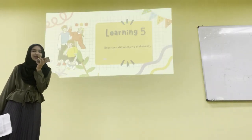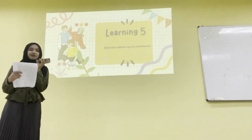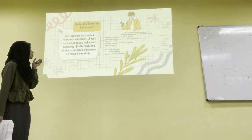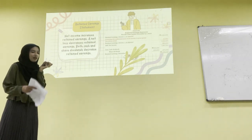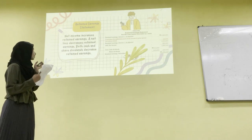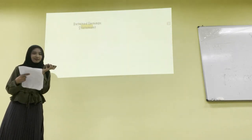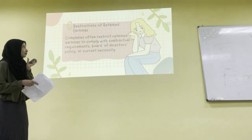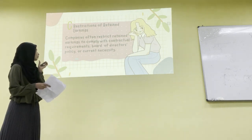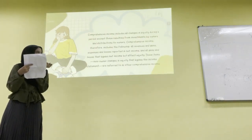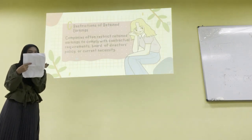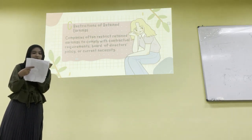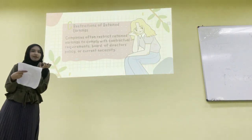Hello everyone, my name is Mutia Intan Permata. I will explain learning objective 5: describe related equity statements. The first is the retained earnings statement. Net income increases retained earnings; net loss decreases retained earnings; and both cash and share dividends decrease retained earnings. Companies may restrict retained earnings to comply with contractual requirements, board of directors policy, or current necessity. The retained earnings section may therefore report two amounts: retained earnings and retained earnings appropriated or restricted.